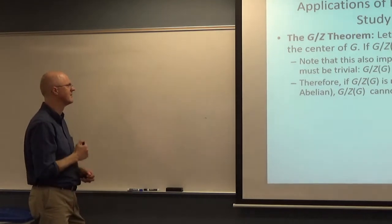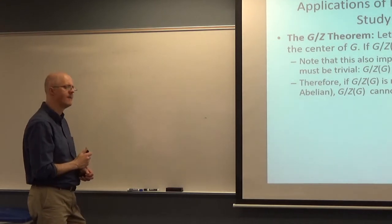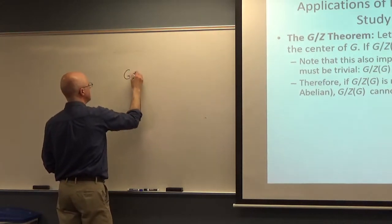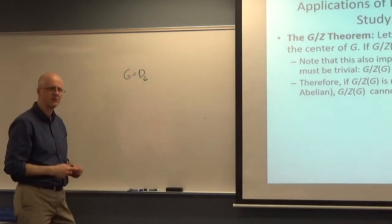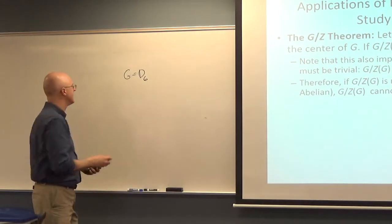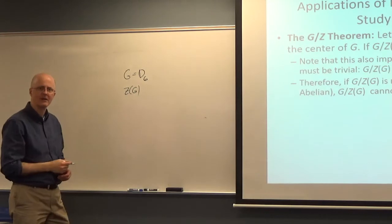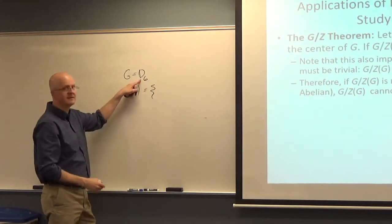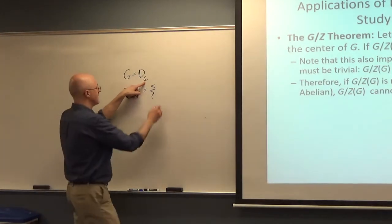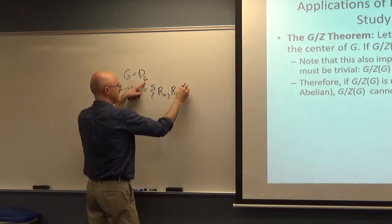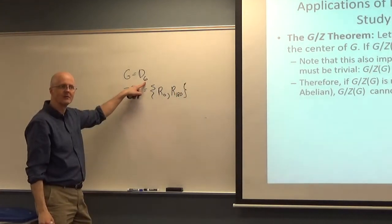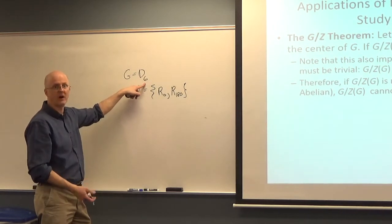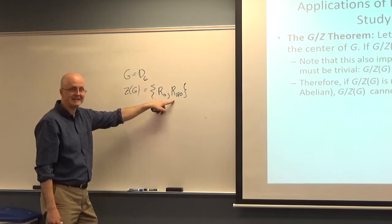As an example of an application, consider G being D6, the symmetries of a regular hexagon — rotations and reflections. Its center: back in chapter 3, it was shown that the center of dihedral groups D_n where n is even consists of the identity and R180. If n is odd, it's just the identity. But if n is even — squares, hexagons, octagons — then R180 is in the group and it is in the center.